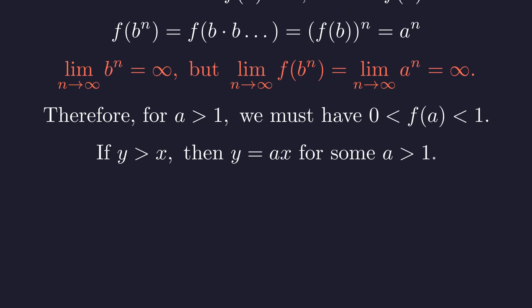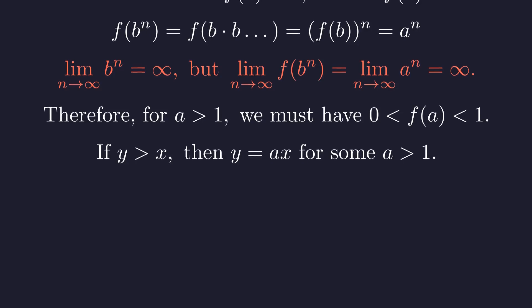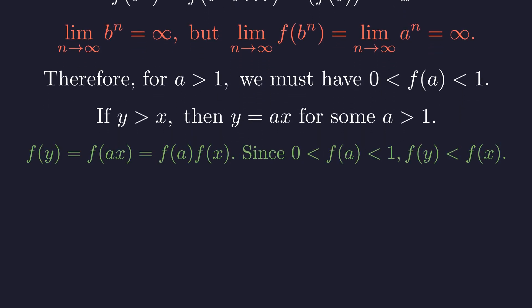Now consider any y greater than x. We can write y as a times x for some a greater than 1. Then f of y equals f of a times f of x. Since f of a is less than 1, this implies f of y is strictly less than f of x. The function is strictly decreasing.